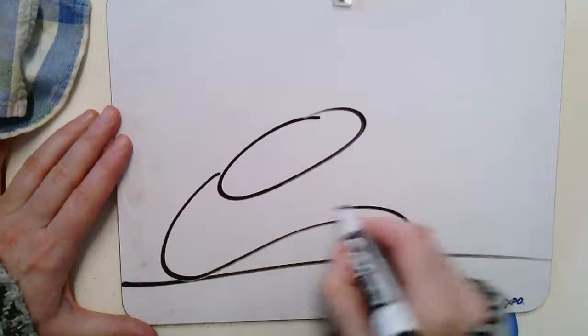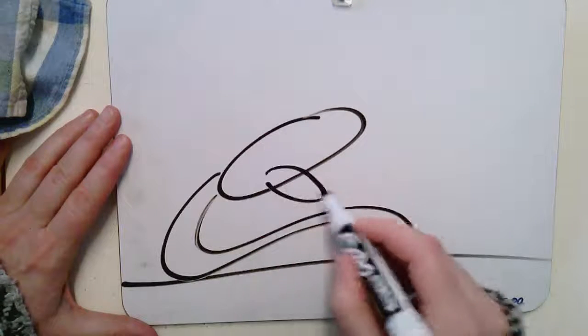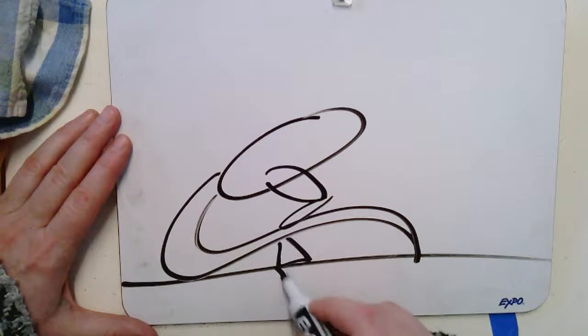Now raptors. Lots of people like those. Let's start with the ground, his body, his tail, his leg, just like the T-Rex just a little skinnier. Triangle toes.